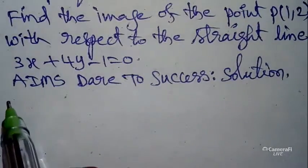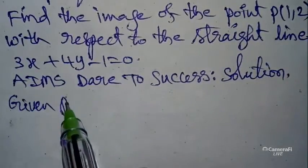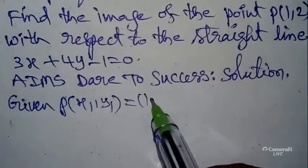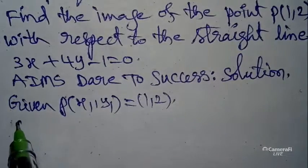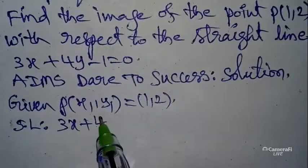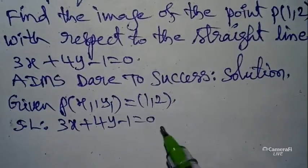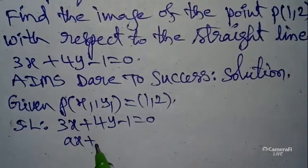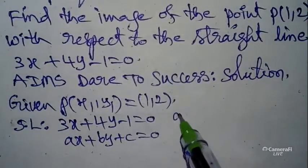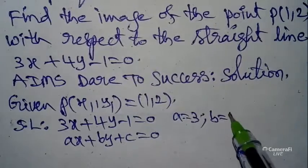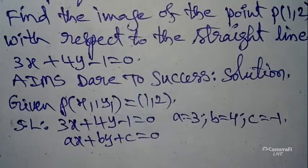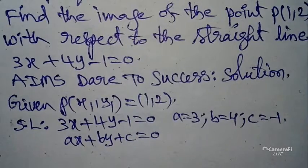Now I want to start the solution for image of the point. Given P(x1, y1) is point (1,2), and the straight line is 3x + 4y - 1 = 0. This is in the form ax + by + c = 0, where a = 3, b = 4, c = -1.